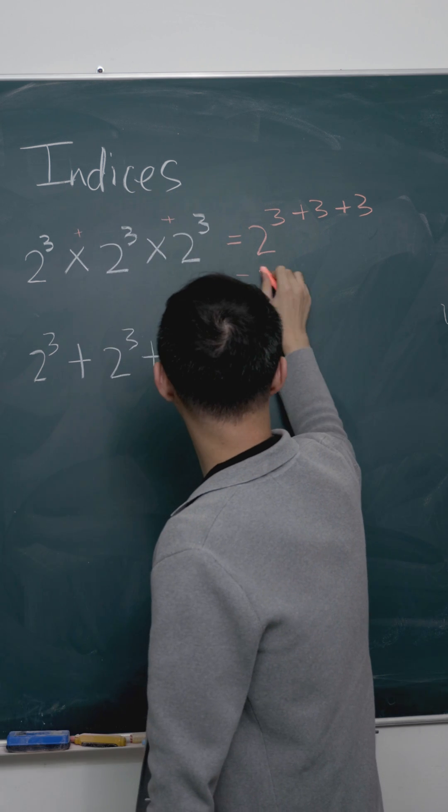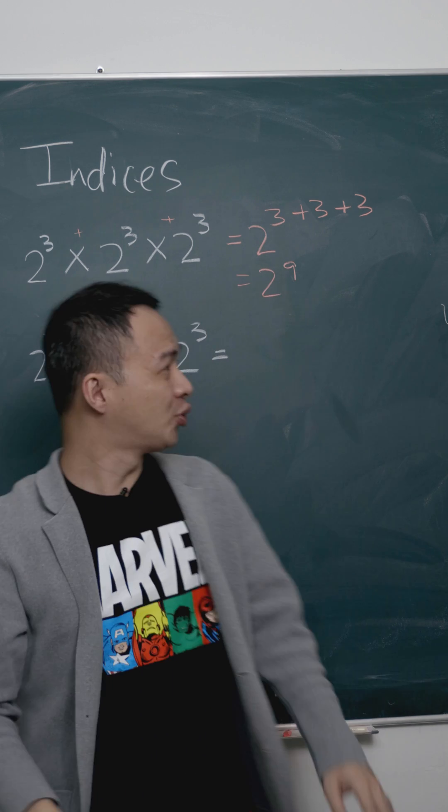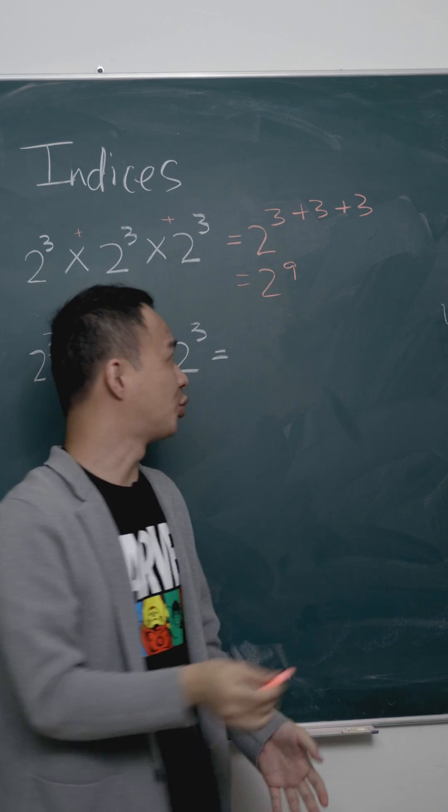So you will get 2 power of 9, and you should know what is 2 power of 9. 2 power of 9 is 512.